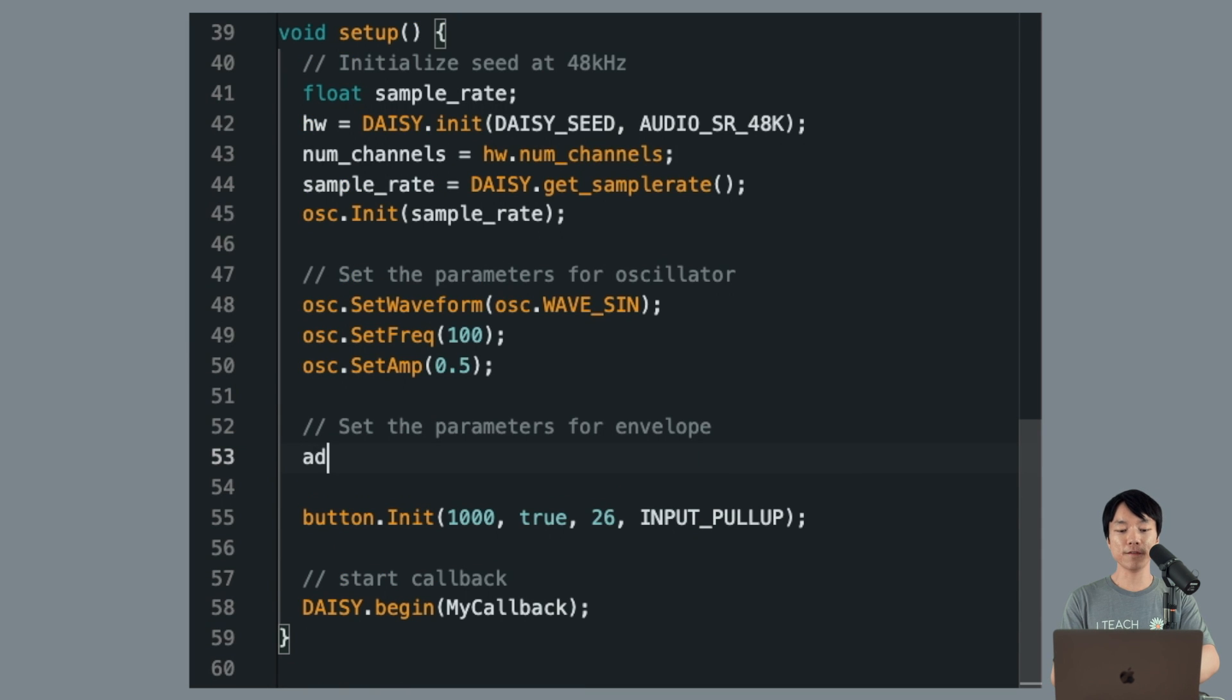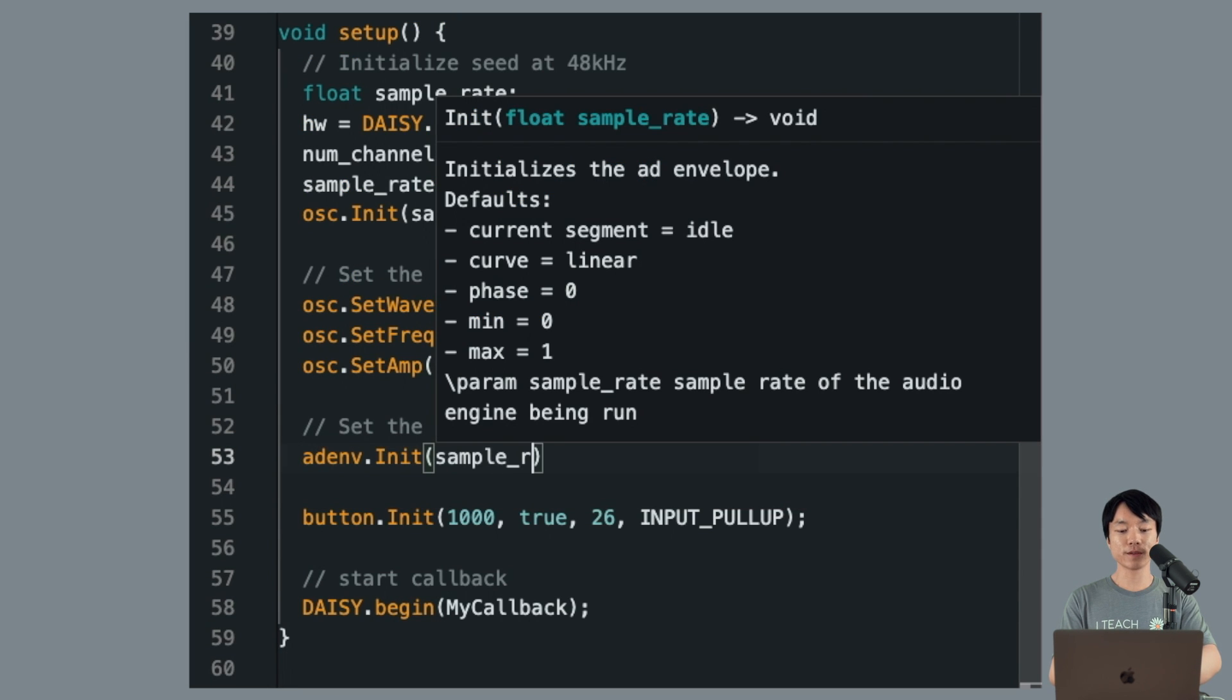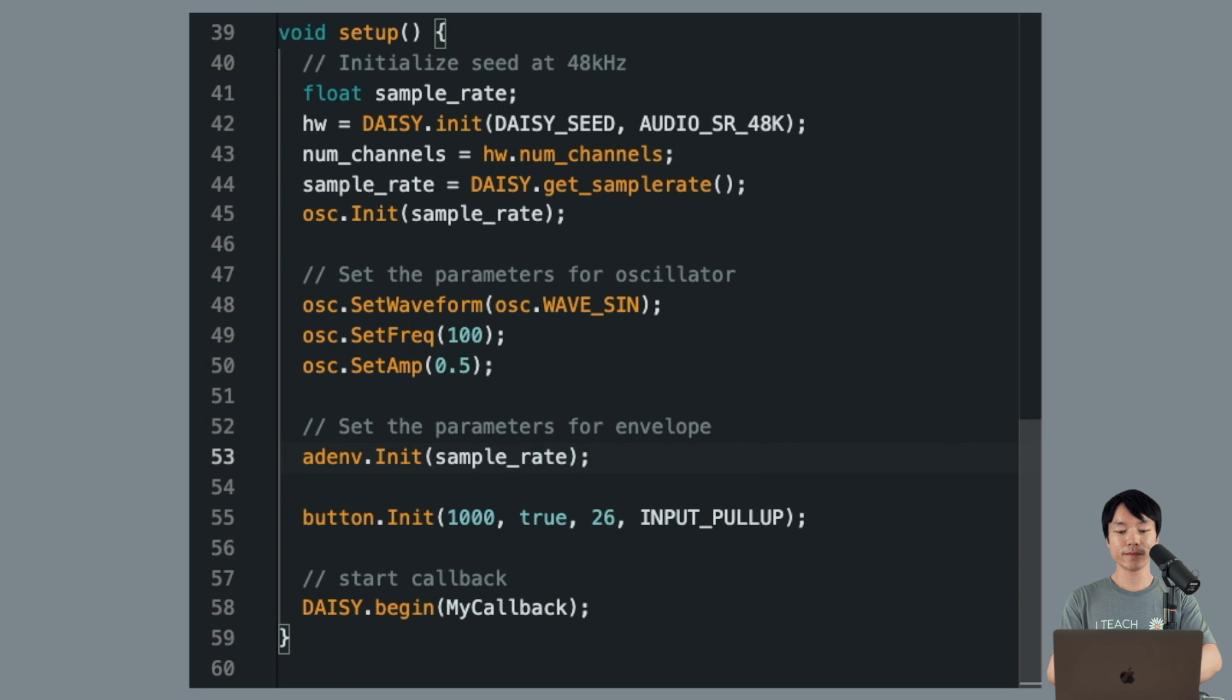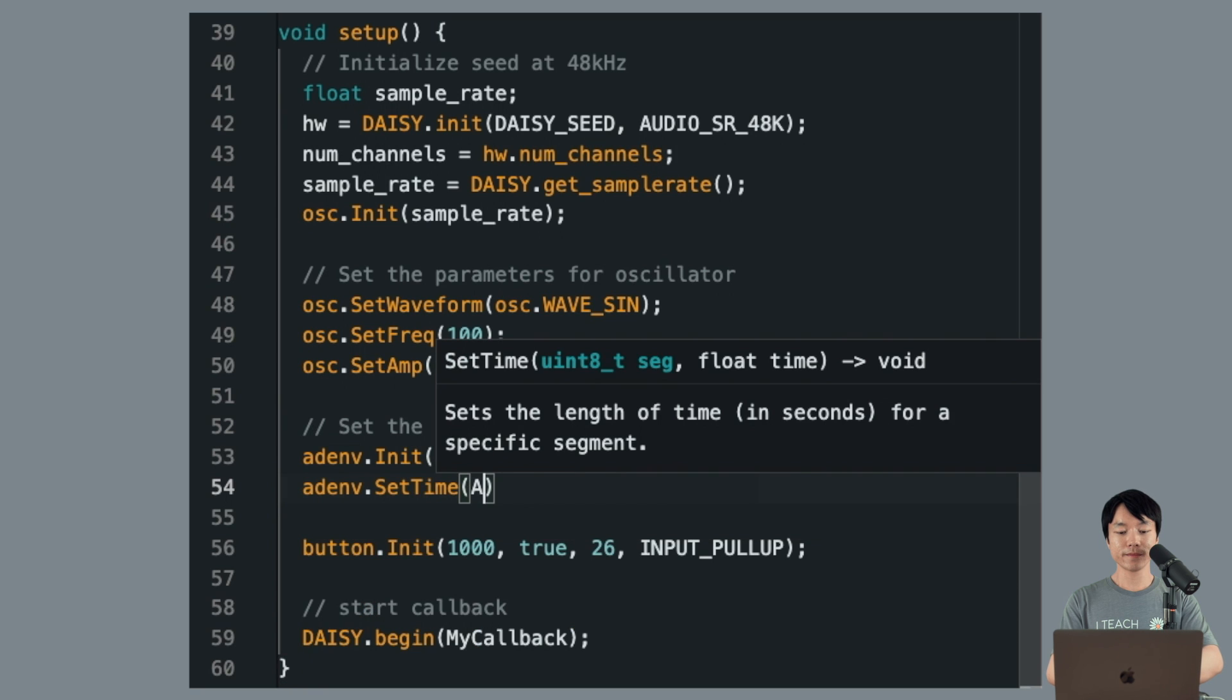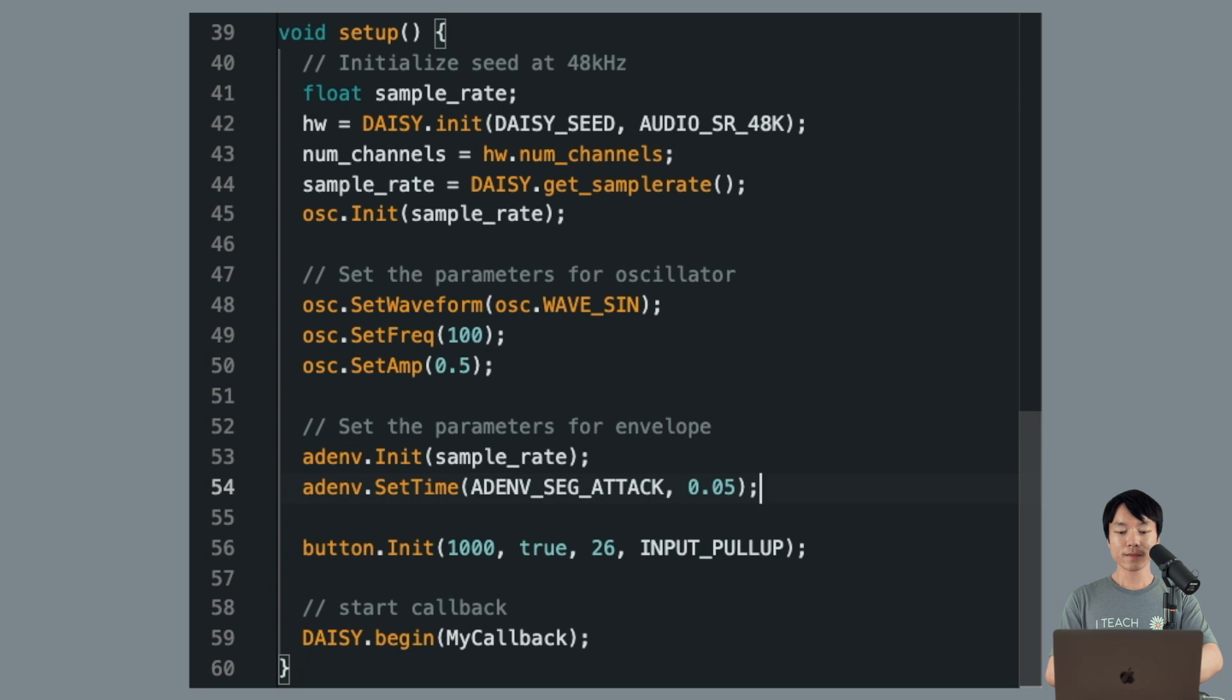Finally, let's specify the envelope that we're generating. So we'll initialize it first. Now we can set the ATTACK time with this line. Since the unit is in seconds, the ATTACK envelope will go from 0.0 to 1.0 in 50 milliseconds.